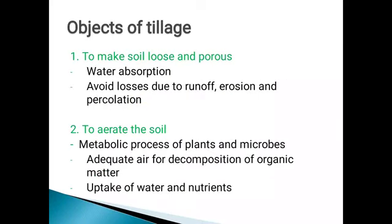The objects of tillage: first, to make the soil loose and porous. The soil should be loose and porous. This is the first object. The second object is to aerate the soil.